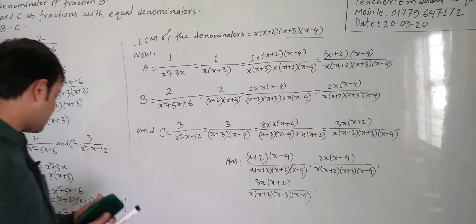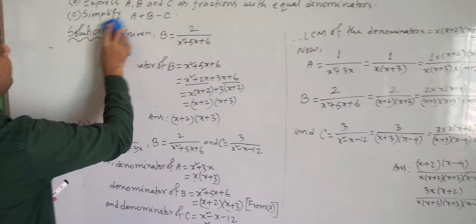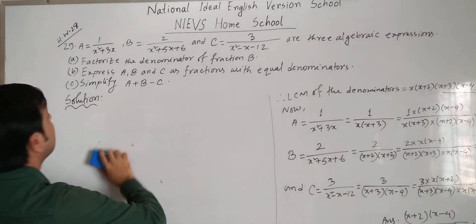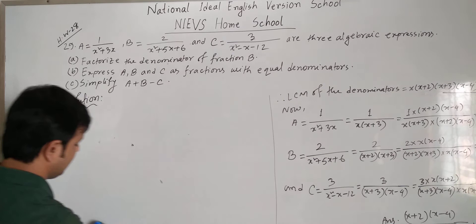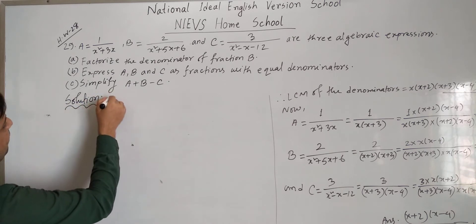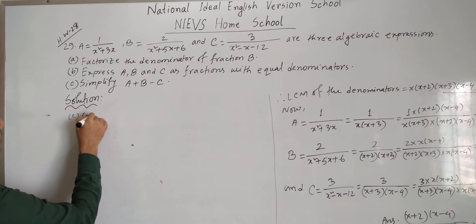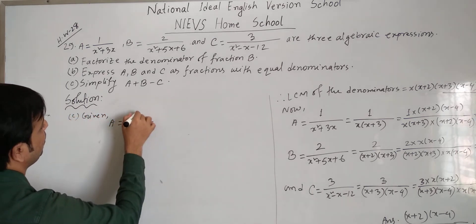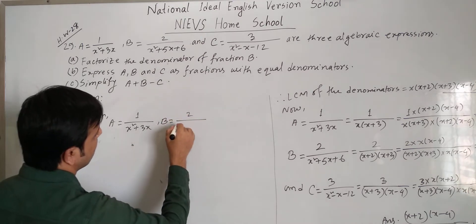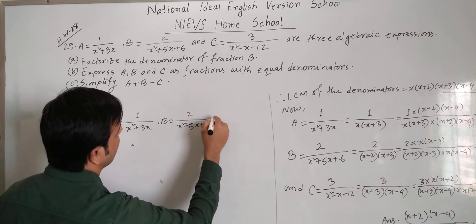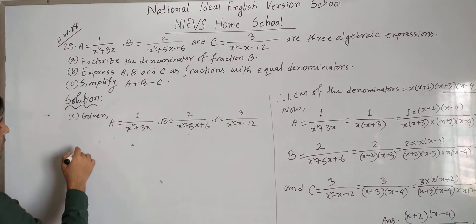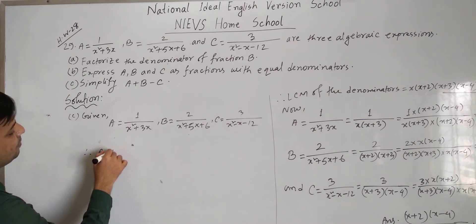Now I will solve question (c): Simplify a plus b minus c. Given a equals 1 divided by (x² + 3x), b equals 2 divided by (x² + 5x + 6), and c equals 3 divided by (x² - x - 12). Therefore, a + b - c equals 1 divided by (x² + 3x) plus 2 divided by (x² + 5x + 6) minus 3 divided by (x² - x - 12).